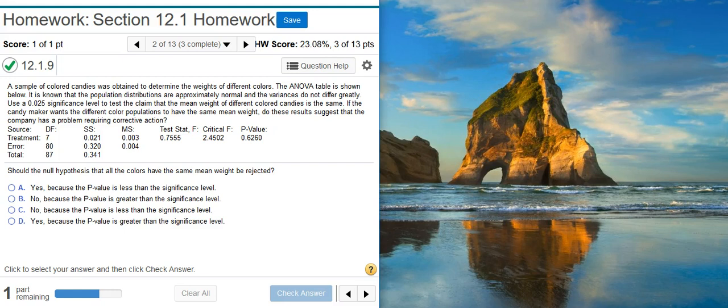Okay, the first part of this problem asks: Should the null hypothesis that all the colors have the same mean weight be rejected?